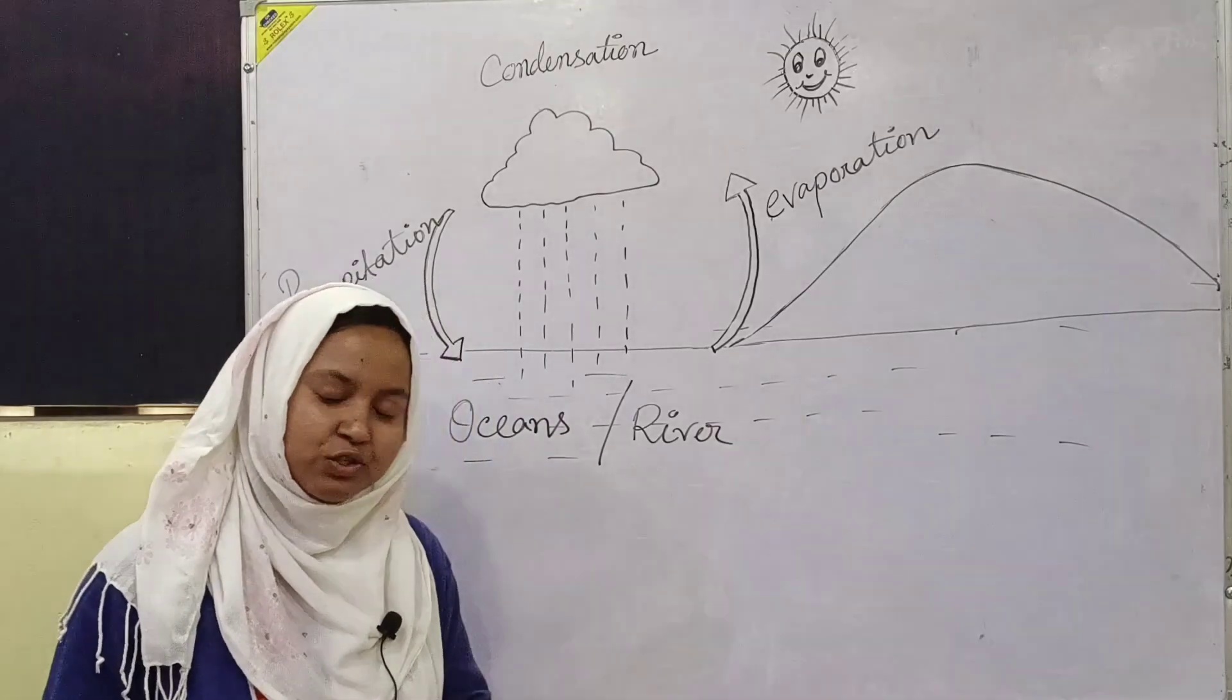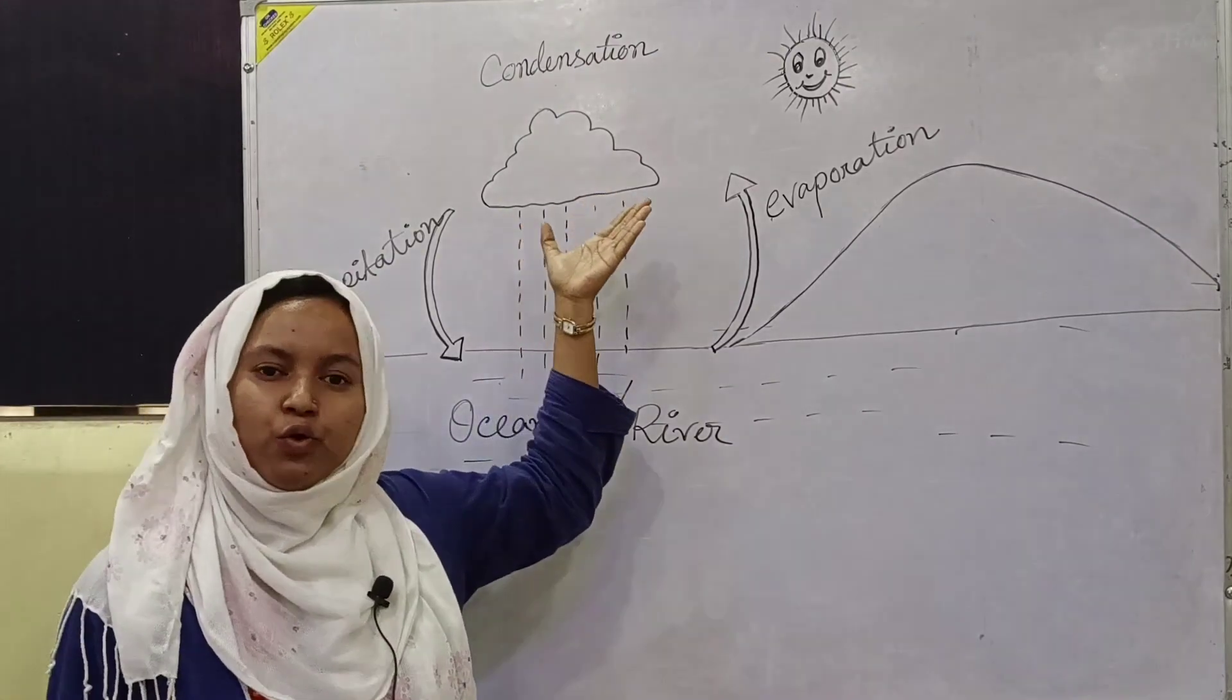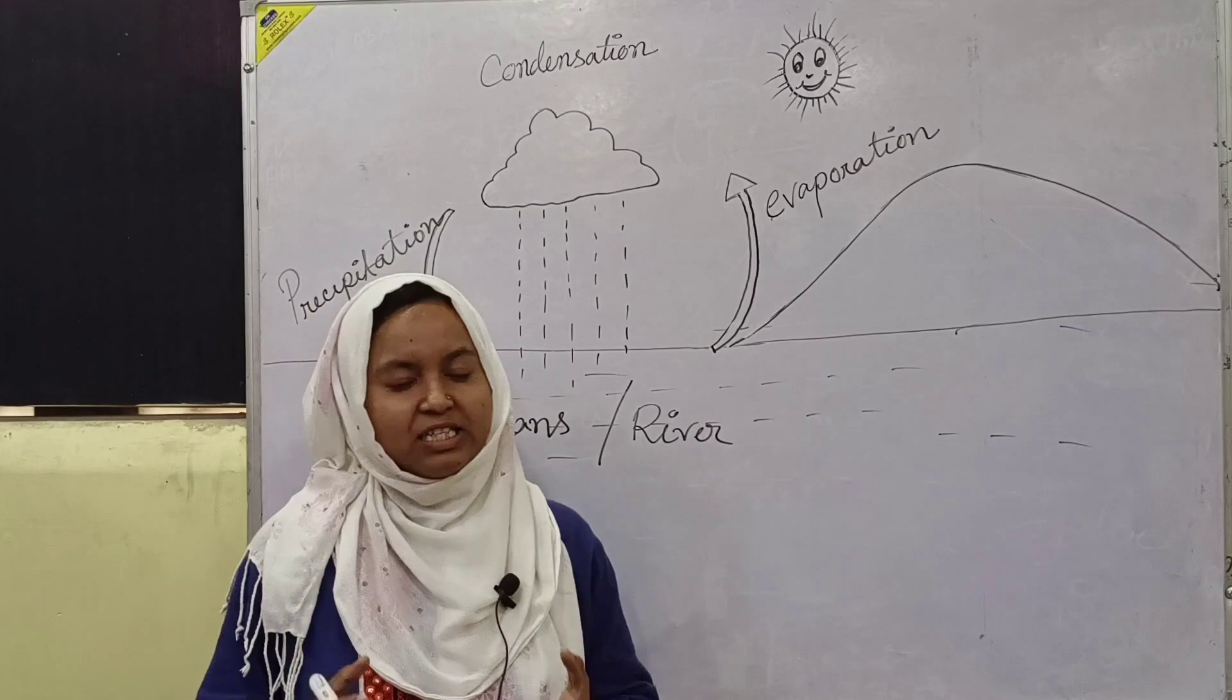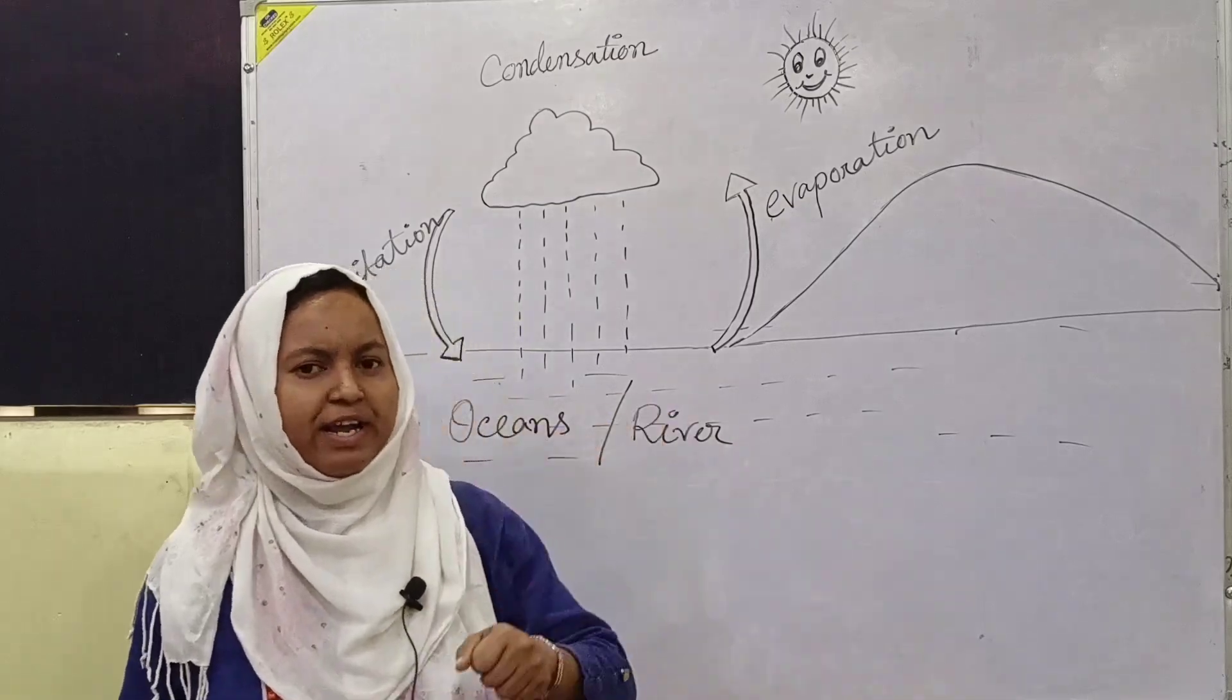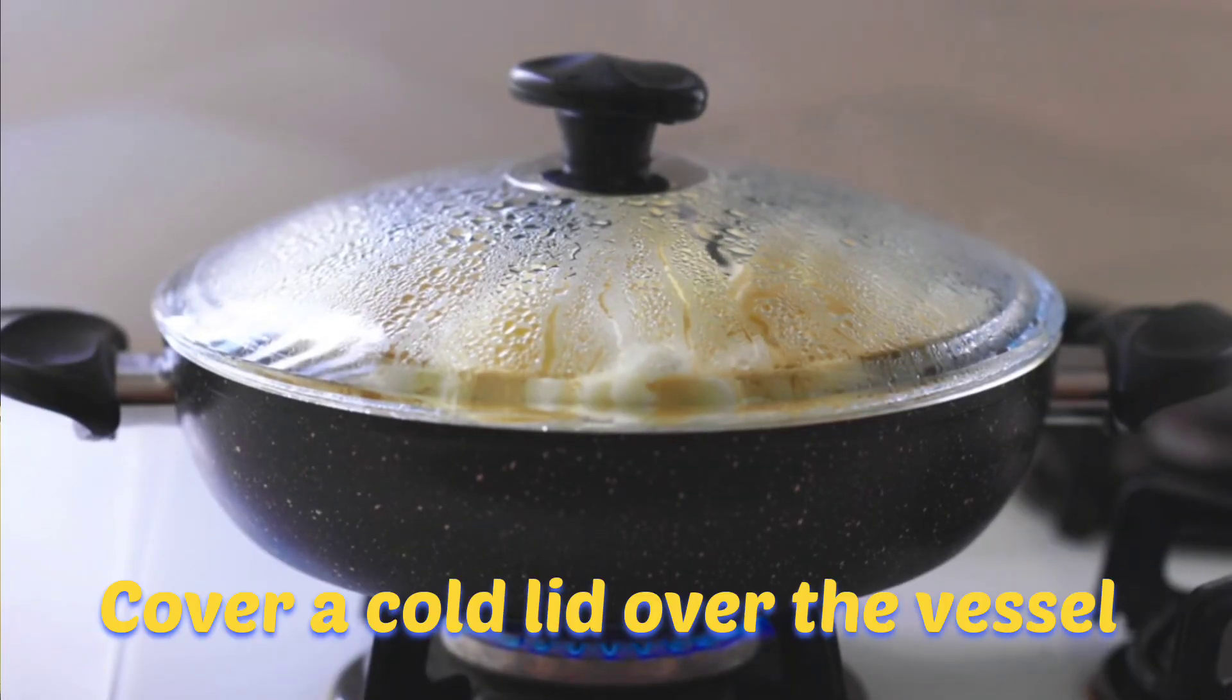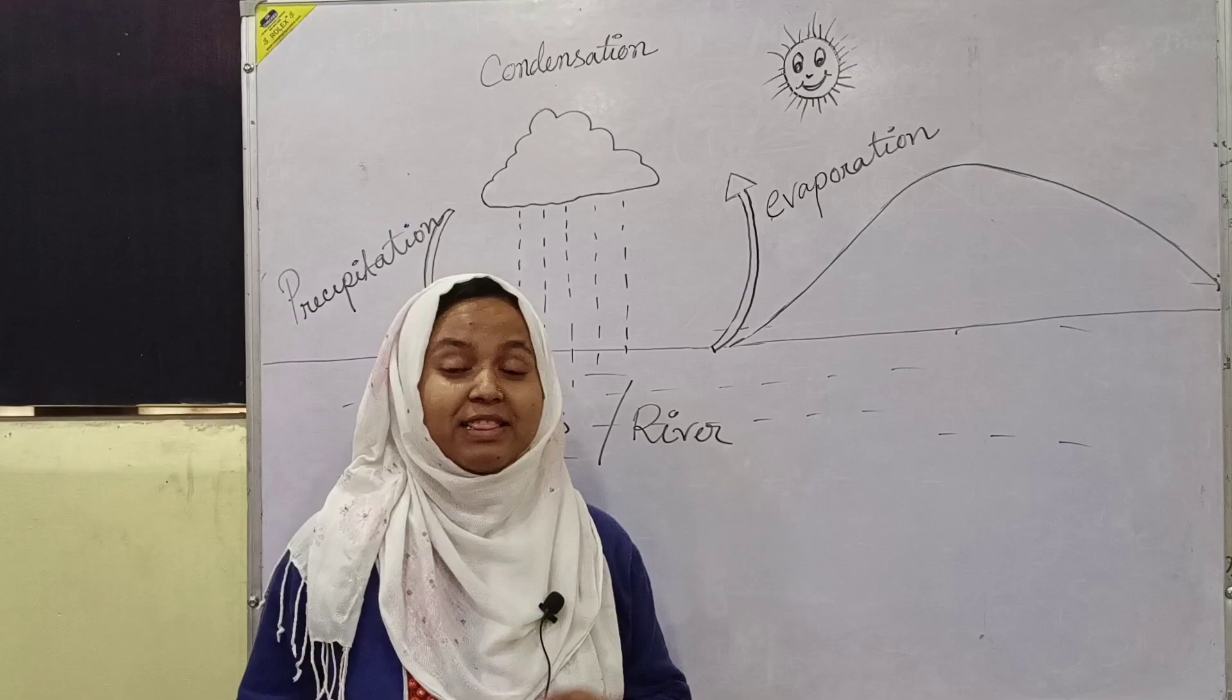Now you all understand how clouds are made. This process is known as condensation. Now you can see this condensation in your home also. In which vessel you heat the water, just cover a cold lid over it. After a few times, when you open that lid, you can see small droplets of water. That one is the condensation.